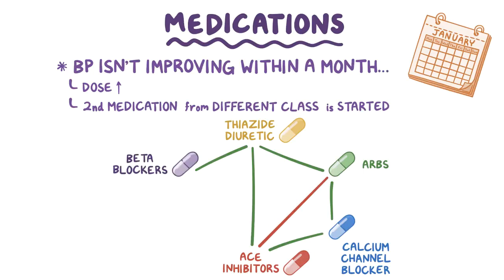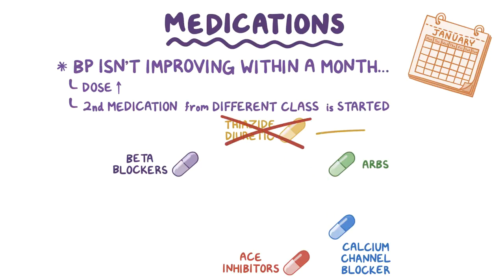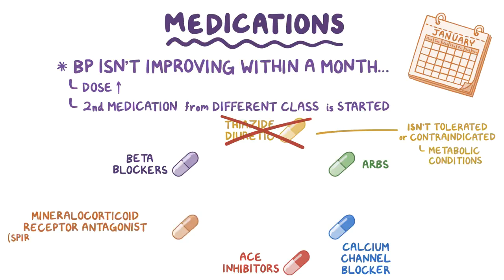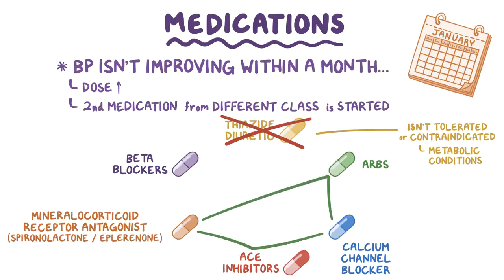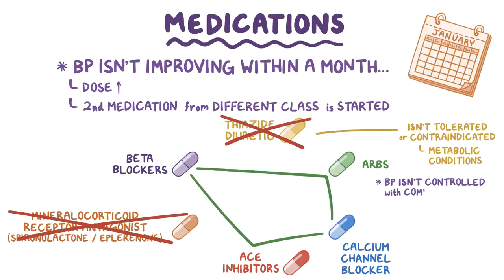In some cases, diuretics may be combined with beta blockers. If blood pressure is not kept under control after combining two medications, then an ACE inhibitor or ARB should be combined with both a thiazide diuretic and a calcium channel blocker. If a thiazide diuretic isn't well tolerated or is contraindicated, for instance in patients with metabolic conditions, then a mineralocorticoid receptor antagonist like spironolactone or eplerenone can be used instead. If those medications also can't be used, then a beta blocker can be used. If blood pressure isn't controlled with a combination of three antihypertensive medications including a diuretic, then it's considered drug-resistant hypertension.